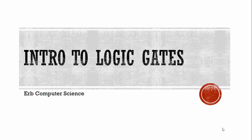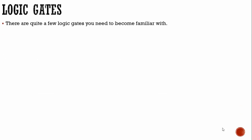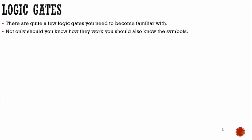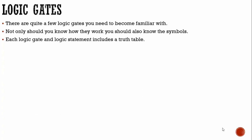In this video, we'll be doing an introduction to logic gates, doing several different gates and working with them and seeing how they are used. There are quite a few logic gates you need to become familiar with. Not only should you know how they work, you should also know the symbols representing each gate. Each logic gate and logic statement includes what we call a truth table, and this allows us to determine what works and what doesn't work — it allows us to see the outcome of various inputs, whether they are on or off depending upon the gates being used.